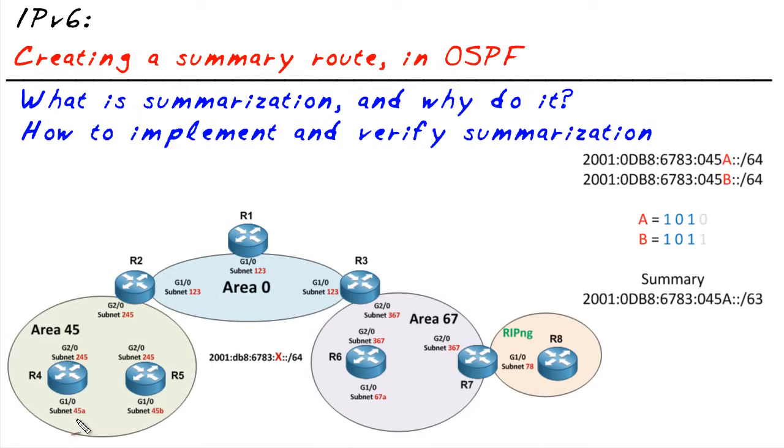An example of how we could summarize a couple of routes and make it just one summary would be these two networks down here. I've got the 45a and 45b subnets—here's my major network. I've also written out the 45a and 45b up here. If we look at R1's routing table, which we should do right now, we're going to see that it has both of those routes, both of those 64-bit routes in it.